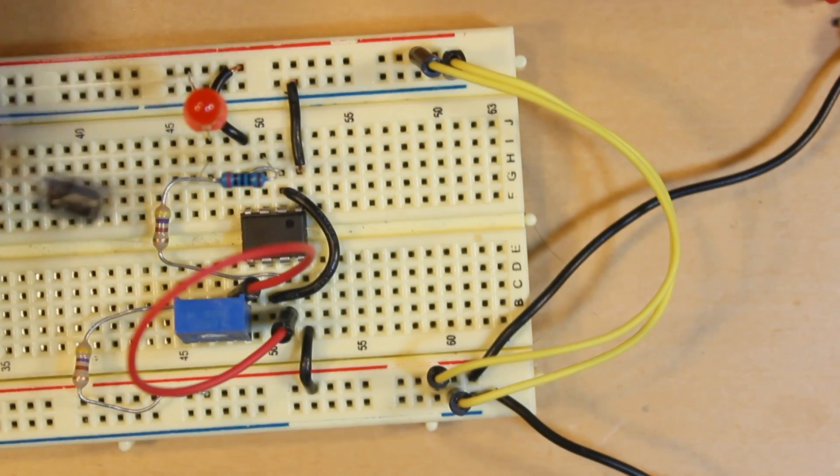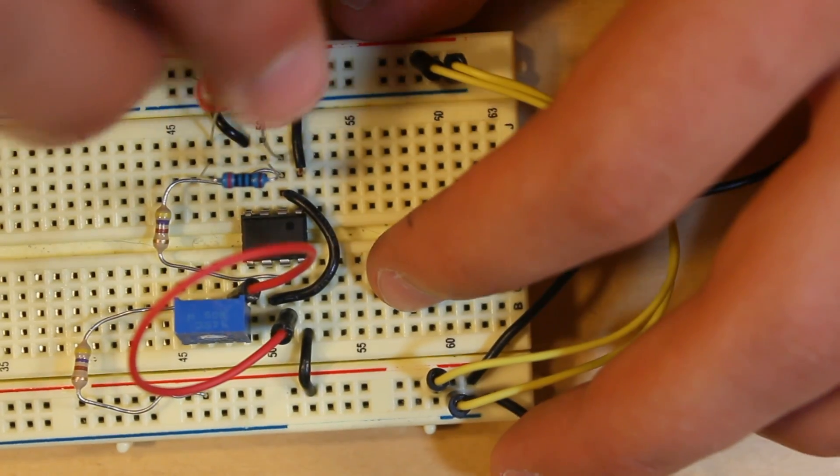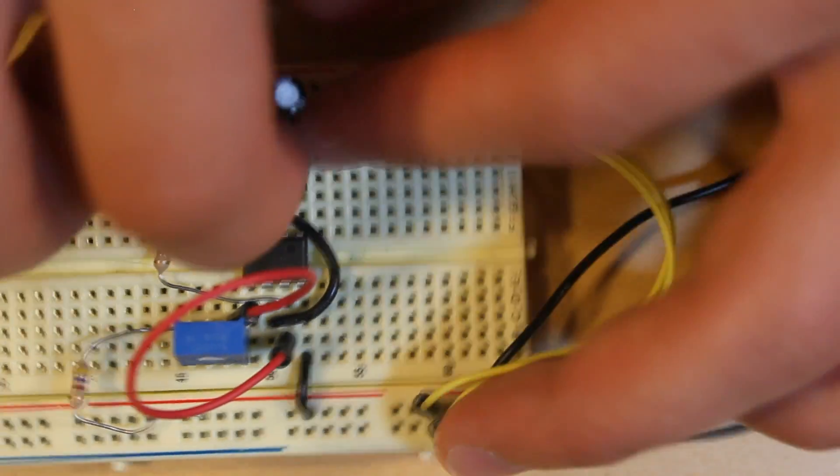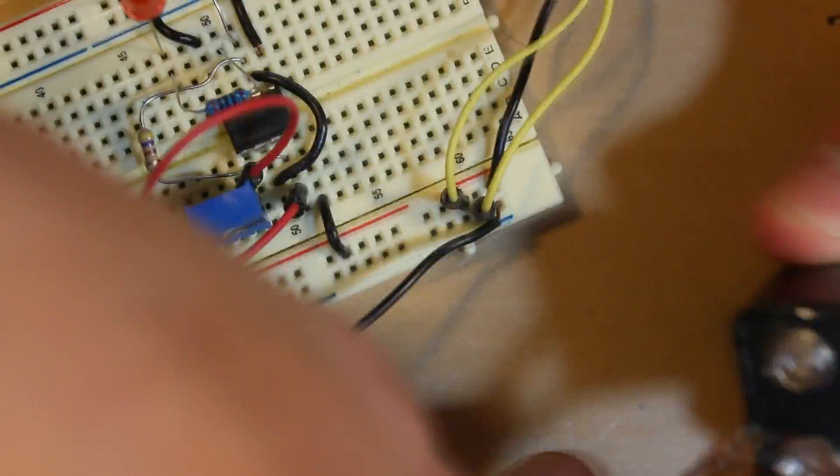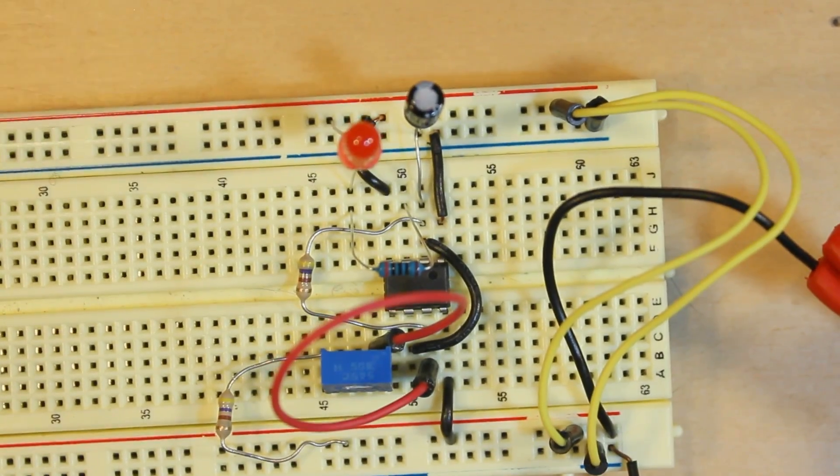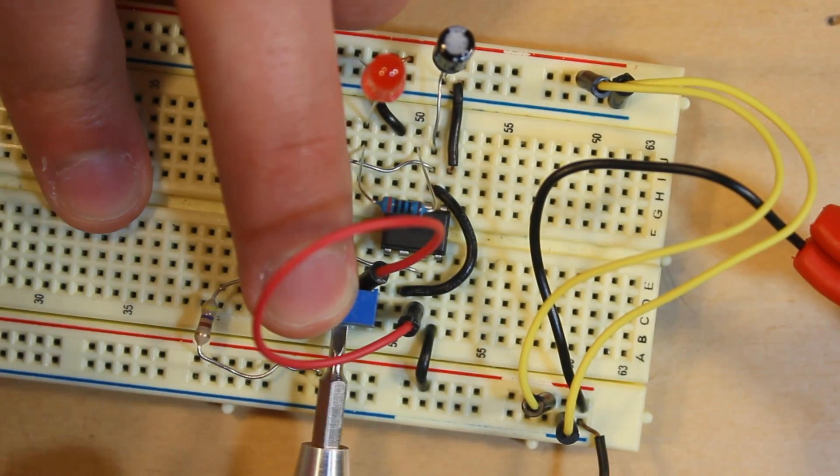Then we're going to take our capacitor and plug the positive into pin 2 and the negative into the negative rail. Last but not least is the battery. We're going to plug that in like that, and we have something which resembles a bike light. It's adjustable with this trimming potentiometer to adjust the speed.